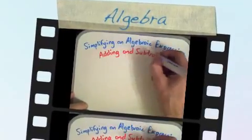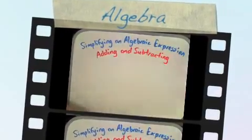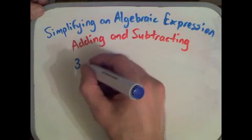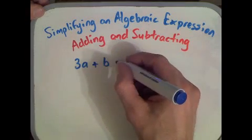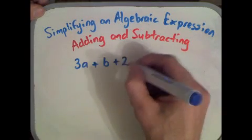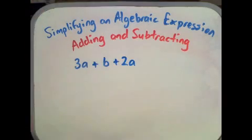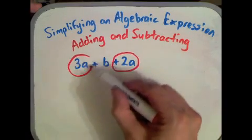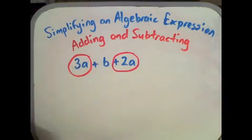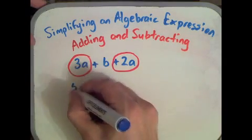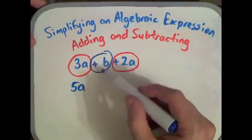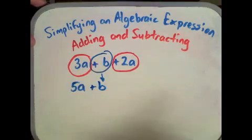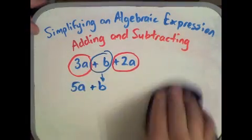We're going to look at simplifying algebraic expressions. The first part we're going to look at is adding and subtracting. Let's look at an example: 3a plus b plus 2a. Remember we can only add and subtract terms that are the same. So 3a plus 2a gives us 5a, and with the plus b we simply tag it on the end because we cannot add it together.